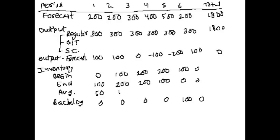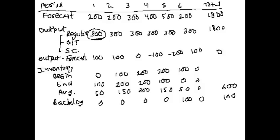Based on the costs in example 1, we calculate the total cost by multiplying quantities by appropriate unit costs. For example, producing 300 units at regular time costs $2 per skateboard, giving $600 for period 1. Multiplying all data points by their appropriate dollar values and summing gives a total cost of $4,700 for the period.